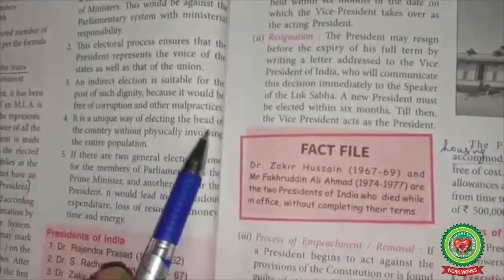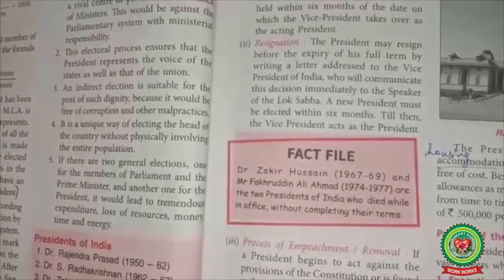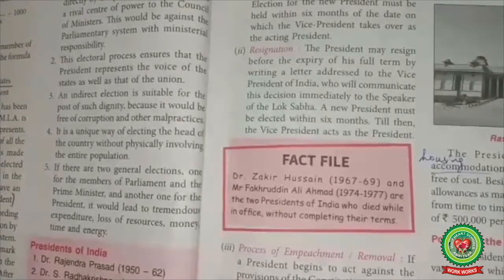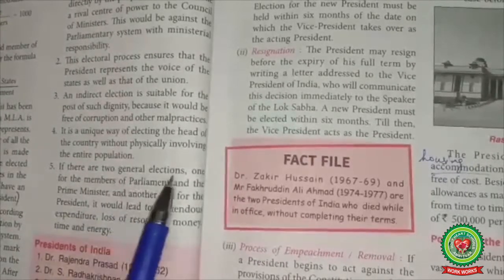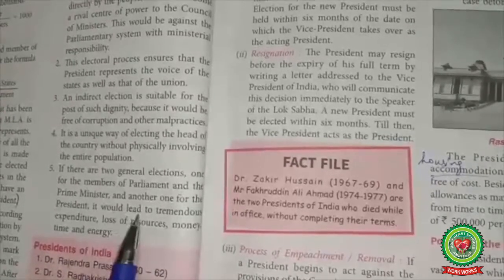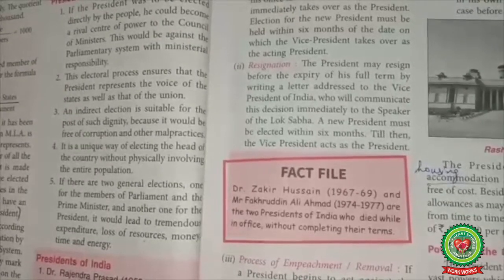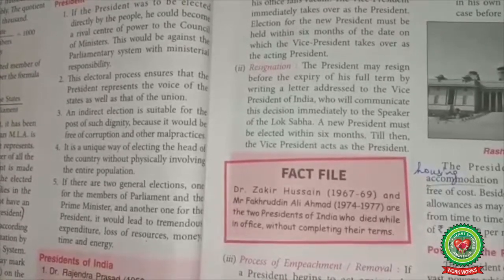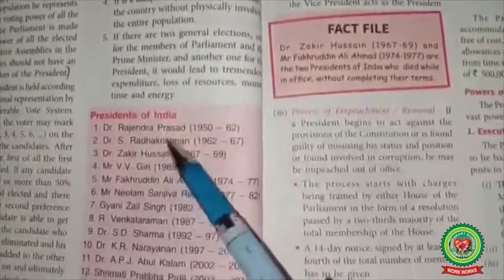It is a unique way of electing the head of the country without physically involving the entire population — people vote through their elected representatives, i.e., MLAs and MPs of both houses. This electoral process ensures the President represents the voice of both the State and the Union. Furthermore, if there were two separate general elections — one for Parliament and Prime Minister and another for President — it would lead to tremendous expenditure and loss of resources, money, time and energy. By following indirect elections, a lot of money, time and energy is saved.